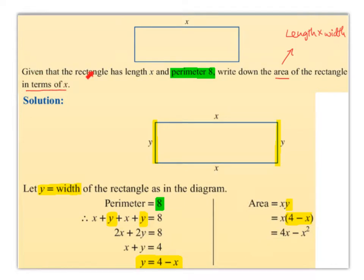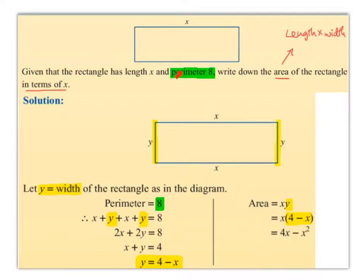Given that the rectangle has a length x and perimeter 8, write down the area of the rectangle in terms of x. So here's our rectangle. We know that the length is x, so this other length must also be x. And we know that the perimeter — if we add up the four sides — we get 8 units.